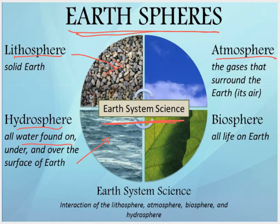We have the atmosphere, which is the gases that surround the earth — basically our air. And then finally we have the biosphere, which is all the living things on earth. Life can exist in the atmosphere, in the hydrosphere, and upon the lithosphere. So life kind of permeates through all of these spheres.